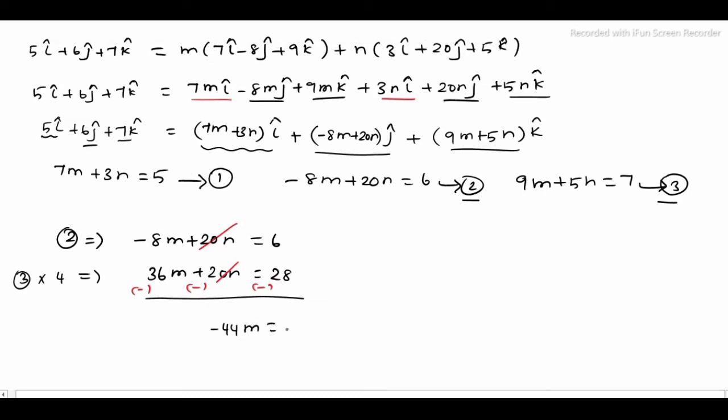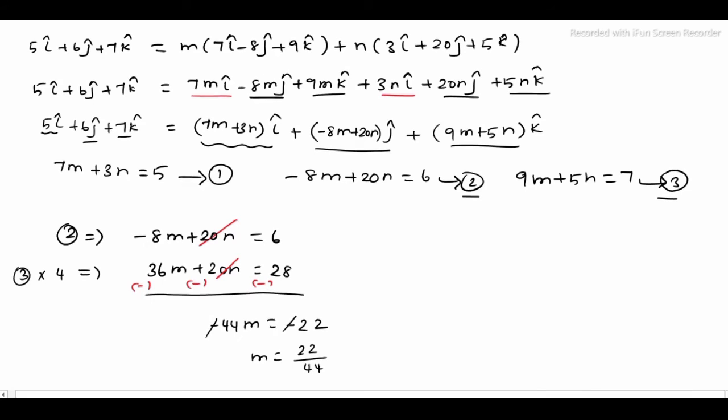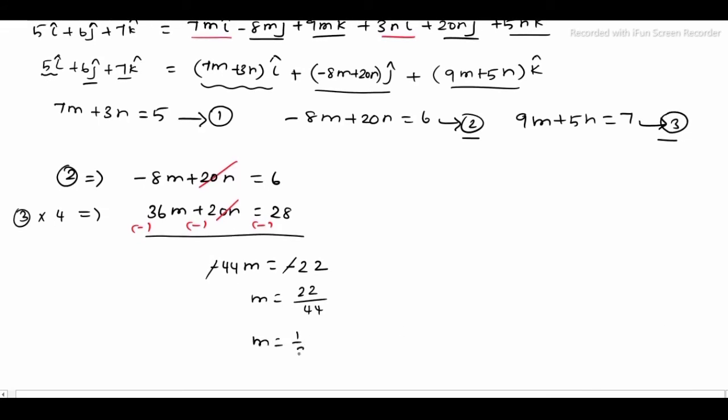After grouping like terms and comparing coefficients, we get: 7m + 3n = 5 (equation 1), -8m + 20n = 6 (equation 2), and 9m + 5n = 7 (equation 3). From equation 2 times 4: 36m + 20n = 28. Subtracting gives -44m = -22, so m = 22/44 = 1/2.